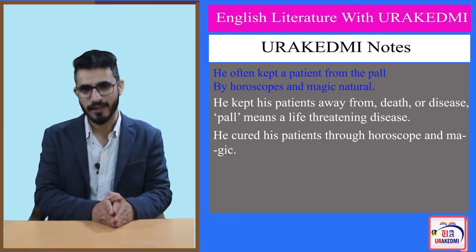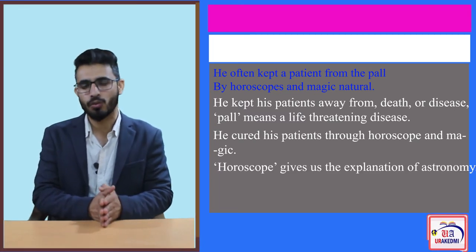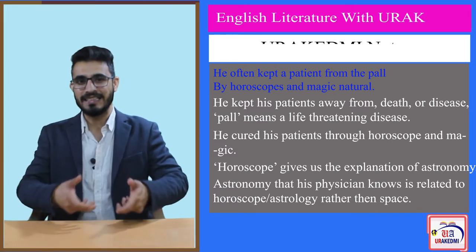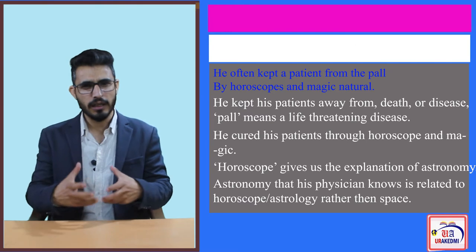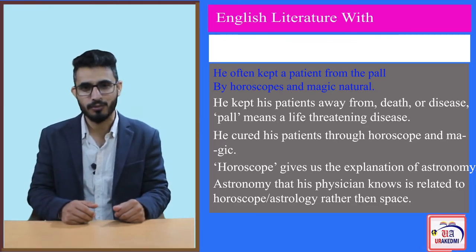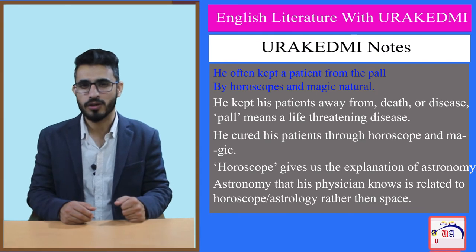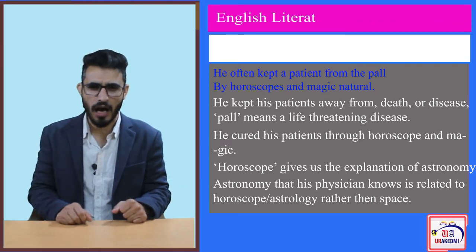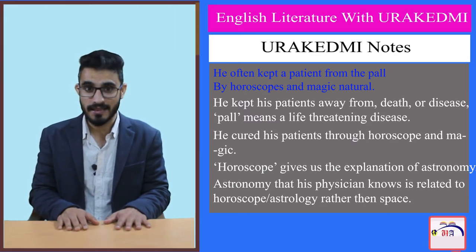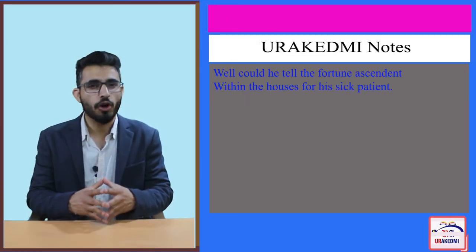The mention of horoscope explains the astronomy this physician knew — it is related to horoscope rather than science. He is not a scientific doctor of contemporary times but follows astrology, and also certain medical practices and herbs. 'Well could he tell the fortune ascendant with the houses for his sick patient.' So he is also a fortune teller, using astrological signs believed to move on the eastern horizon and affect human activities on earth.